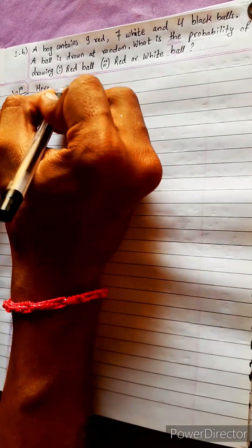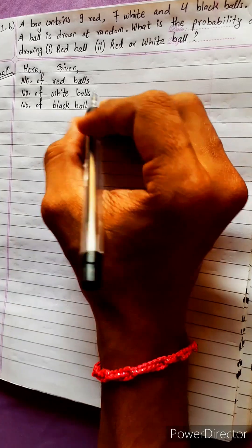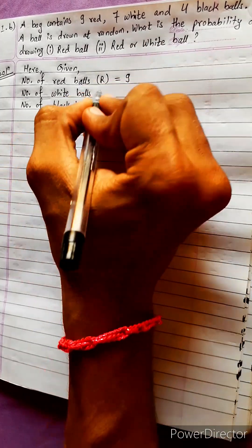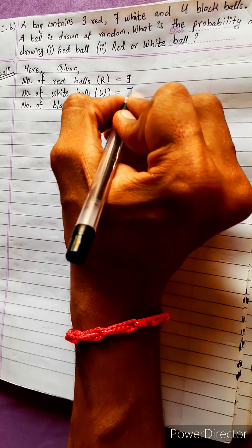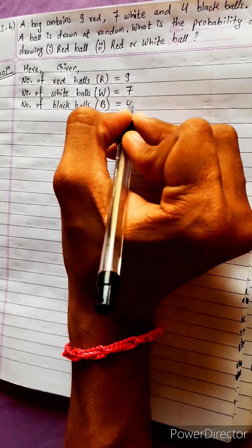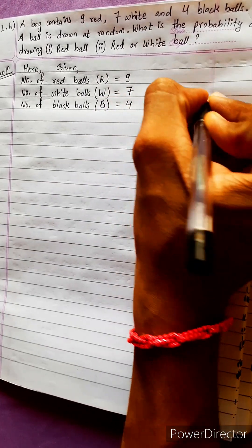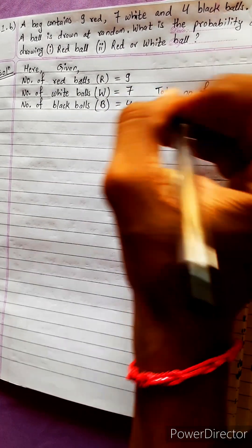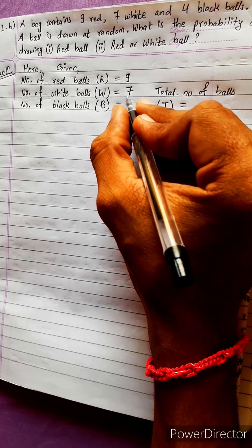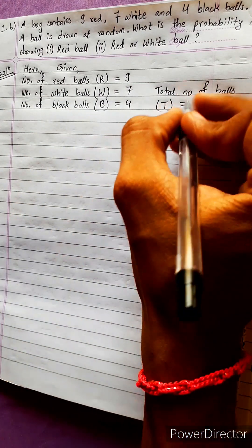Let me read the first one. Given: number of red balls, suppose R. Number of white balls, suppose W, equals to 7 white balls. 4 black balls, B equals to 4. This is the total number of balls — 9 plus 7 plus 4 equals 20. Total of 20 balls.